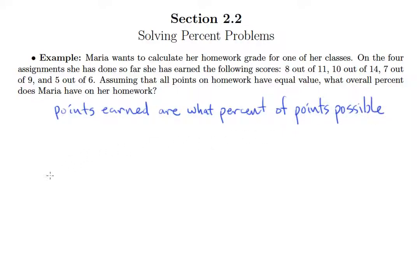Well, points earned and points possible should be easy for us to figure out, because earned we can see that she earned 8, 10, 7, and 5. So we can easily total that up and get the total points earned, and so looks like that's 30. So for the points earned piece here we can call that 30.